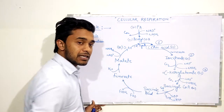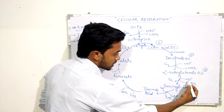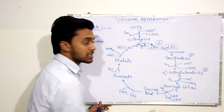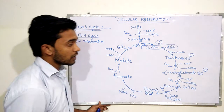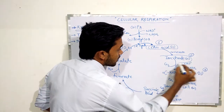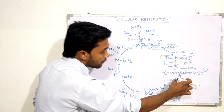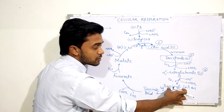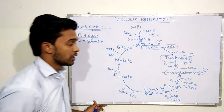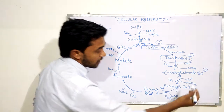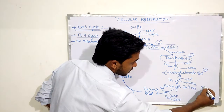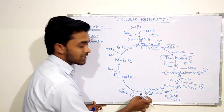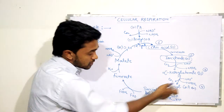Isocitrate is a six-carbon compound and alpha ketoglutarate is a five-carbon compound, so one carbon is released in the form of CO2. After that, in step three, alpha ketoglutarate is converted to succinyl coenzyme A. This is again a redox reaction and the compound reduced is NAD into NADH2. Alpha ketoglutarate is a five-carbon compound and one carbon is released out as CO2, forming succinyl coenzyme A which is a four-carbon compound.